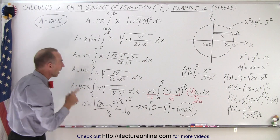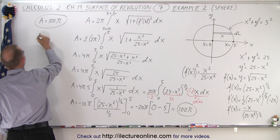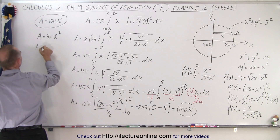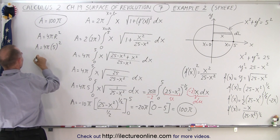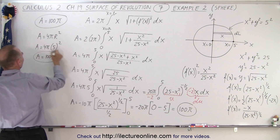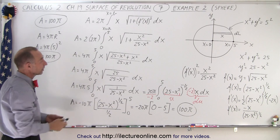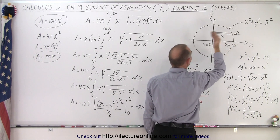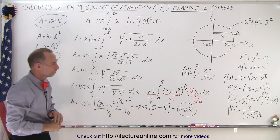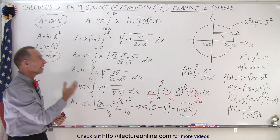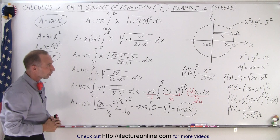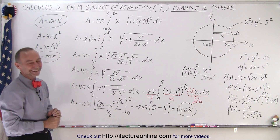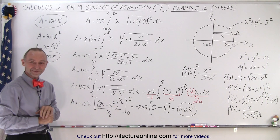That gives 100π for the full sphere, since we multiplied by 2 to include both upper and lower halves. To verify: the surface area formula for a sphere is 4πr squared; with radius 5, that's 4π times 25, which is 100π — the same answer. We could also have revolved around the x-axis instead of the y-axis, and if done without mistakes you would get the same answer. That's left as an exercise for the student to build confidence.